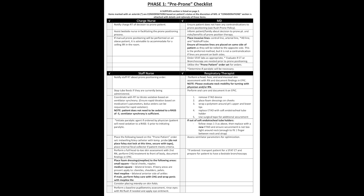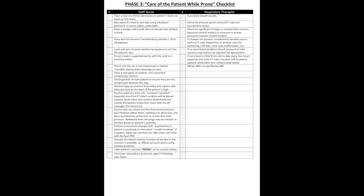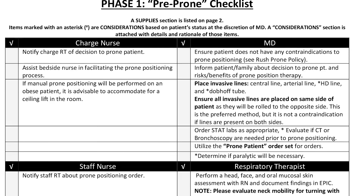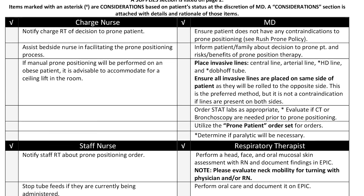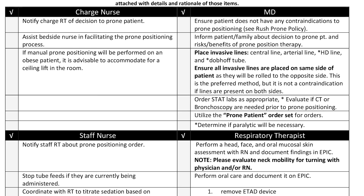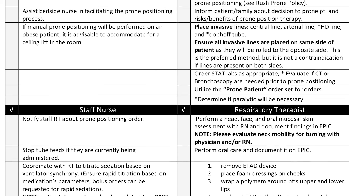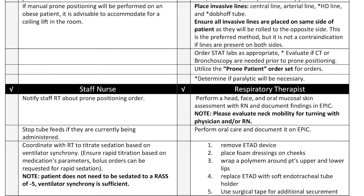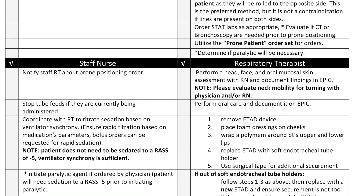Phase one checklist consists of getting the interdisciplinary team on board to prepare the patient to be placed in the prone position. The main items to highlight are ensuring invasive lines are placed on the same side of the patient. This is not a contraindication if lines are on opposite sides, but same-side placement is preferred. If lines are on opposite sides, the central line takes precedence over the arterial line, which will be explained later.